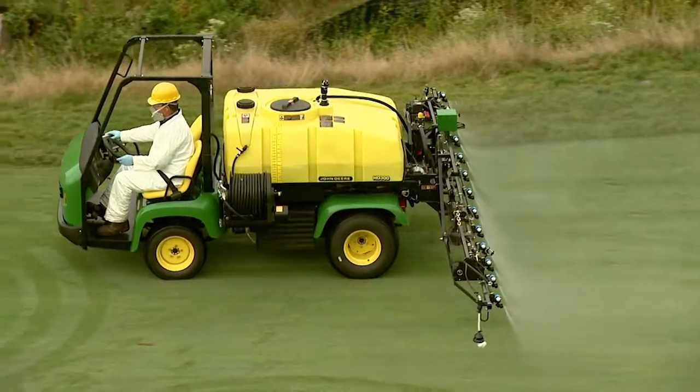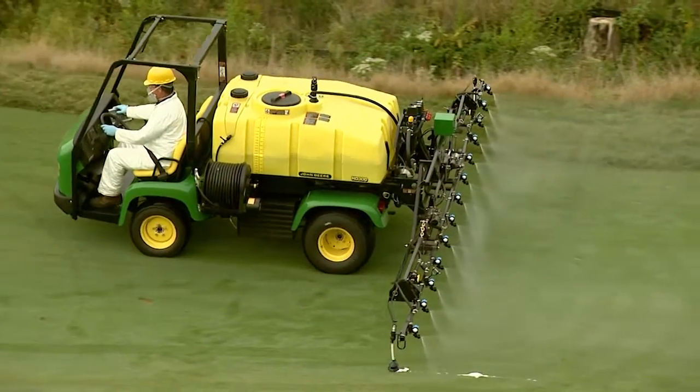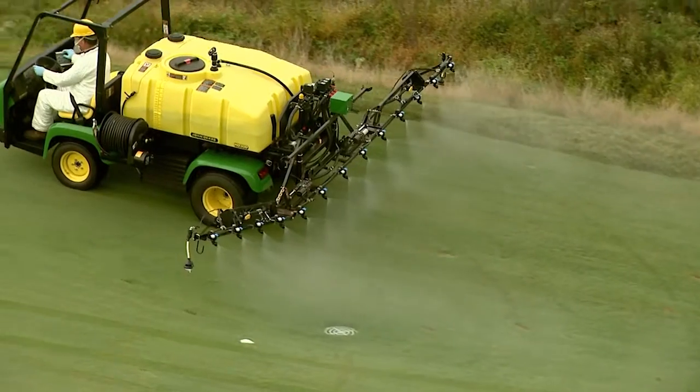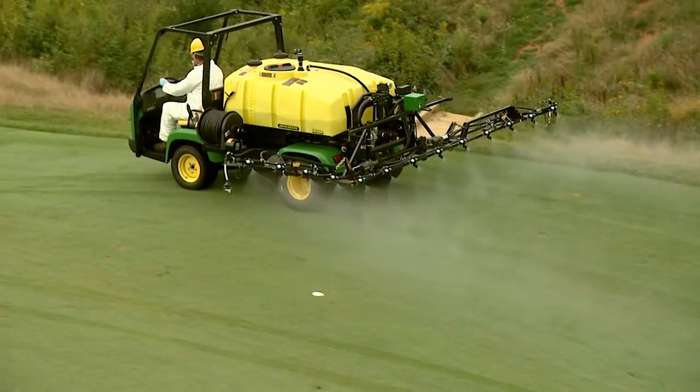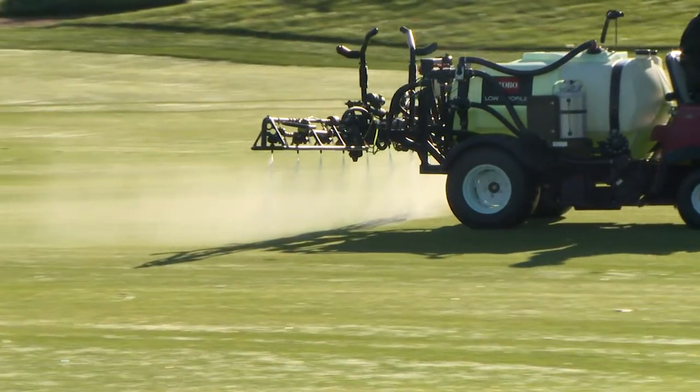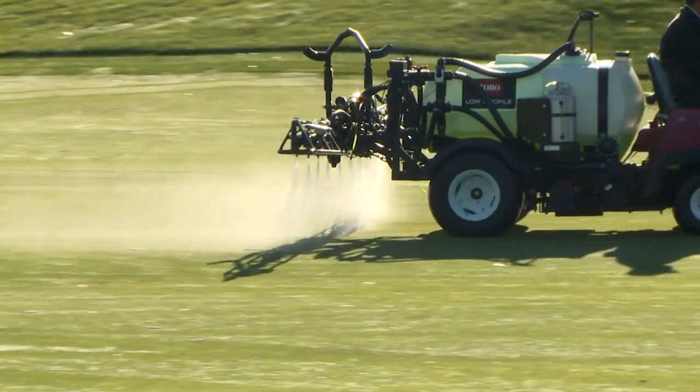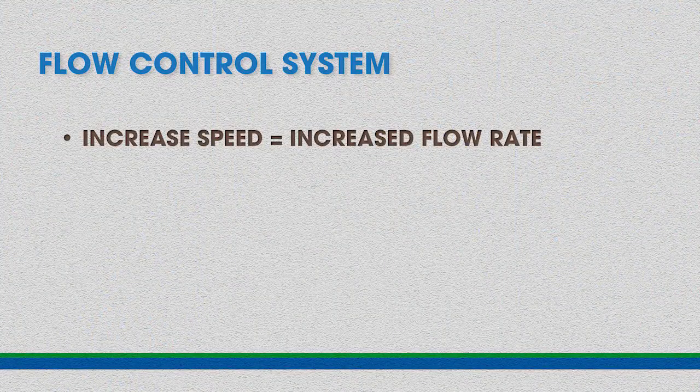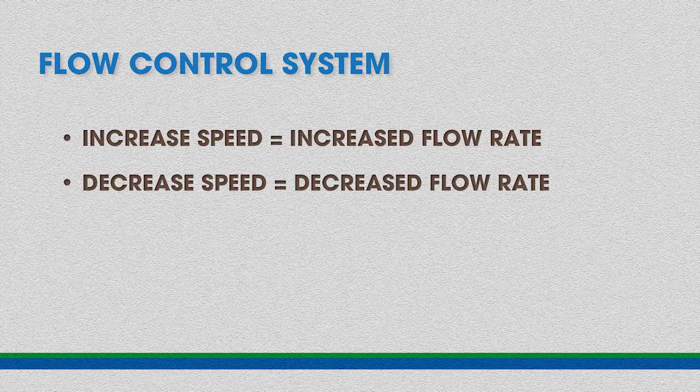An important concept is what happens as you change speeds during the application when using a flow control system. Most of the time the speed you operate the sprayer at is based on the type of sprayer, the terrain, and the location. As you vary speed, if you don't change any other variables, you also change your gallons per acre. When using a flow control system, the computer compensates for speed changes by changing the nozzle flow rate — an increase in speed results in an increase in flow rate, and a decrease in speed results in a decrease in flow rate. The system changes the flow rate by changing pressure, and that's a key point because the change in pressure doesn't just change the flow rate — it also changes the droplet size.